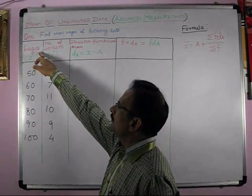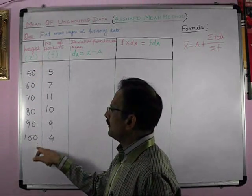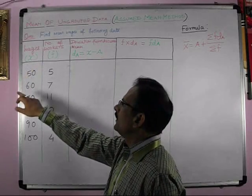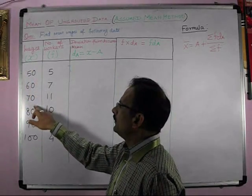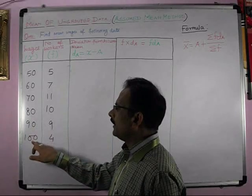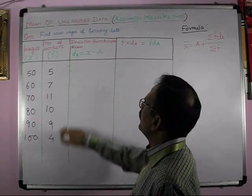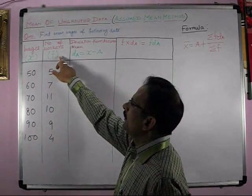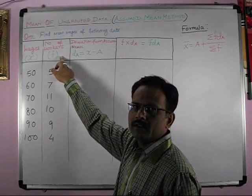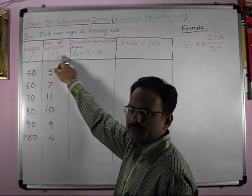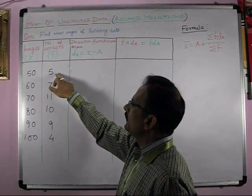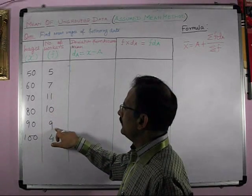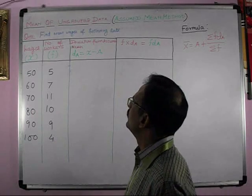Our question is find the mean wages of the following data. In the question, the wages are given, which would be denoted by X. The wages are 50, 60, 70, 80, 90 and 100. And the number of workers who are getting these wages, we will denote by F. This is called the frequency. So, the frequencies we have 5, 7, 11, 10, 9 and 4.